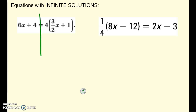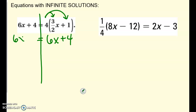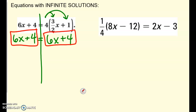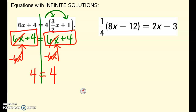How about this type? If I start to work this out and distribute, I get 6x plus 4 equals 6x plus 4. You'll notice that the left-hand side is exactly the same as the right-hand side — that means anything you put in for x is going to work; it is always going to be true. If you keep going and cancel the 6x's on both sides, you end up with 4 equals 4. Yes, 4 is always equal to 4 — it doesn't matter what x is, it is always true. So we call this infinite solutions.